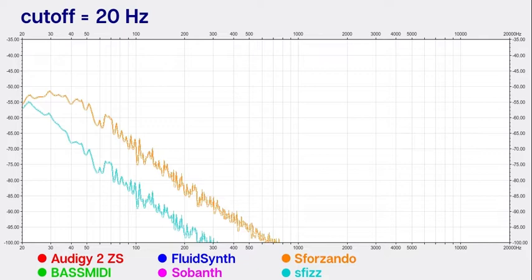I created these graphs by playing a white noise sample through all synthesizers at different cutoff values and then viewed the results in a frequency analyzer. The y-axis shows decibels and the x shows frequency.